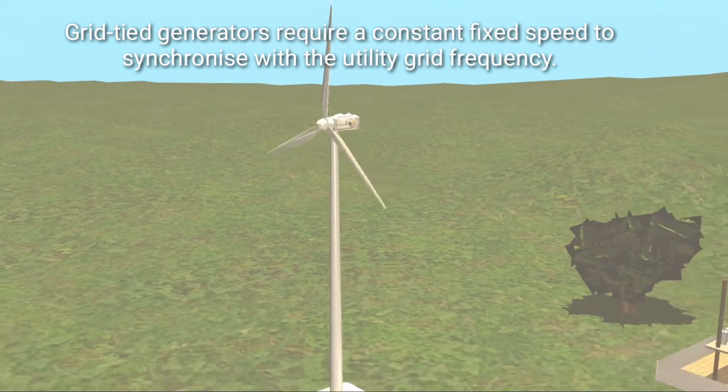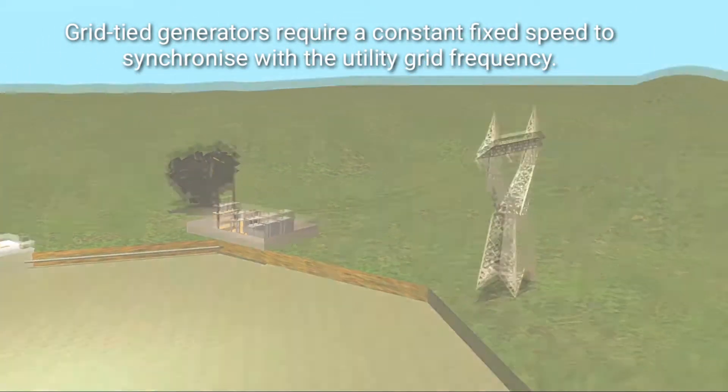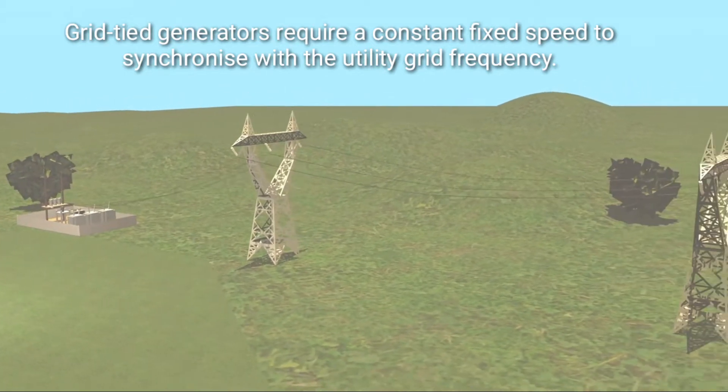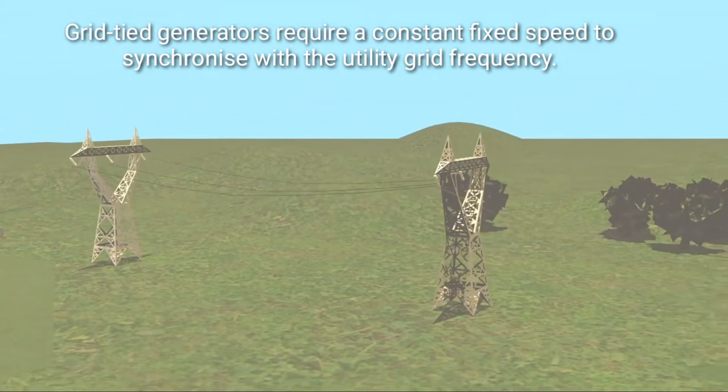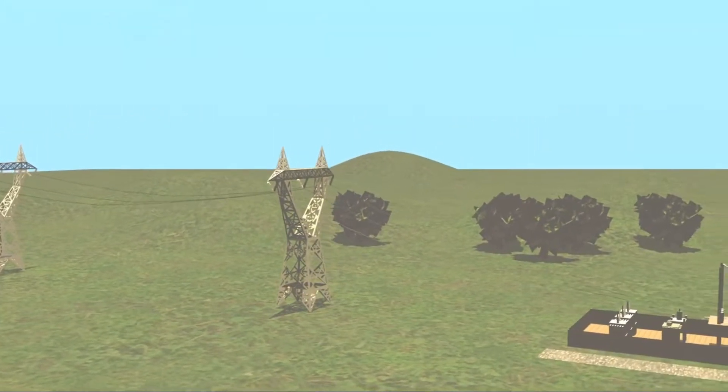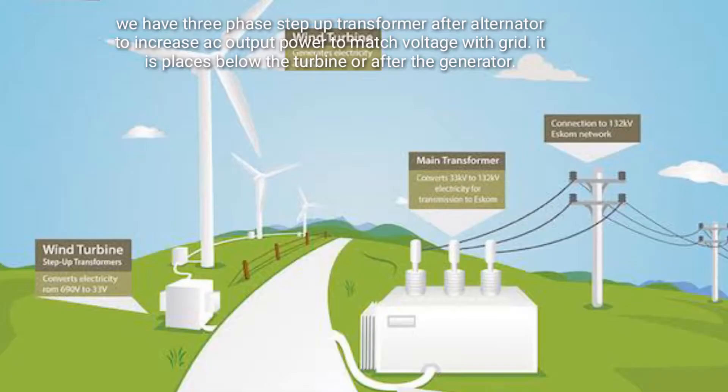Grid-tied generators require a constant fixed speed to synchronize with the utility grid frequency. We have a three phase step-up transformer after the alternator to increase AC output power to match voltage with grid.